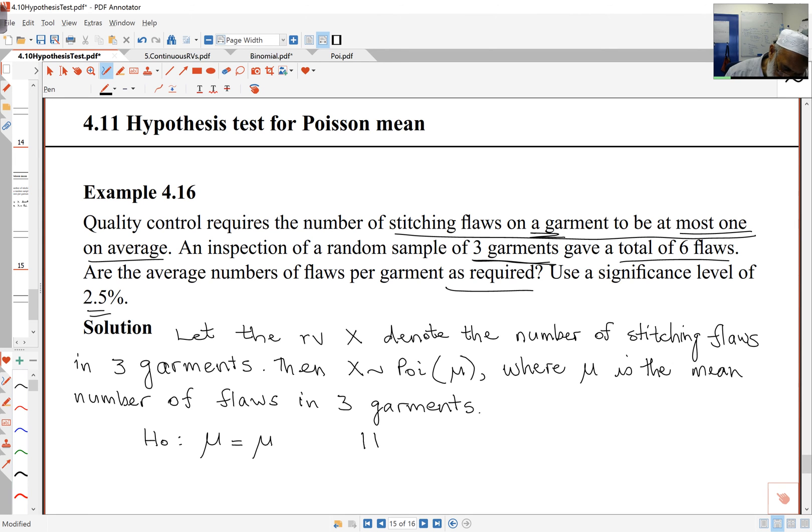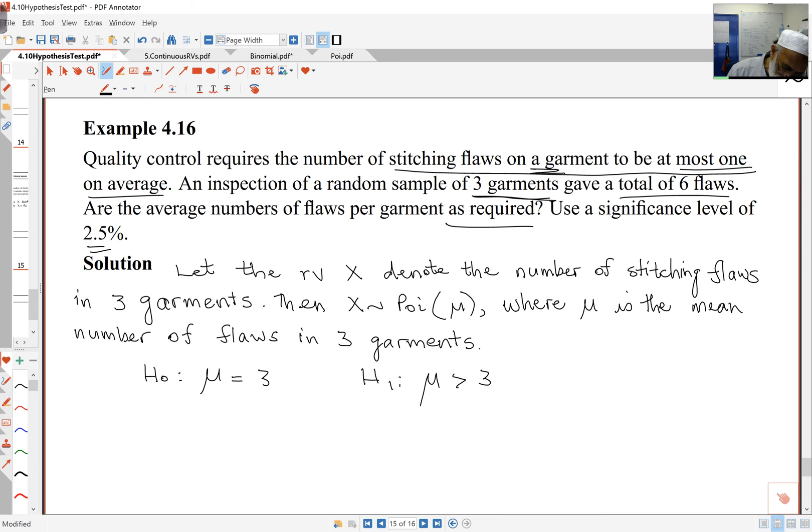If I have more than that, then I have a problem, so mu bigger than three is my alternative hypothesis. My observed value of the test statistic is we actually found six flaws.